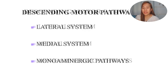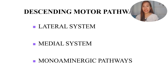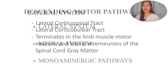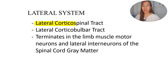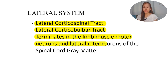We call this the descending motor pathways - descending because it comes from the brain. Voluntary movements are initiated by the brain, that's why it is considered descending. We have a lateral system, a medial system, and a monoaminergic pathway. For the lateral system, we have the lateral corticospinal and lateral corticobulbar tracts. Both of these tracts terminate in the limb muscle motor neurons and lateral interneurons of the spinal cord gray matter.